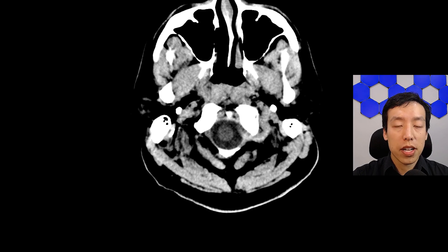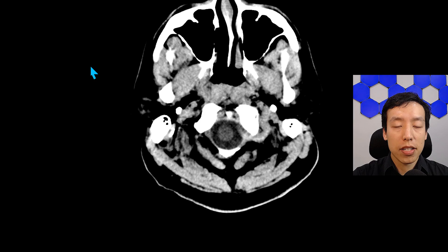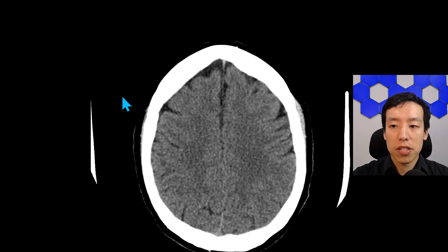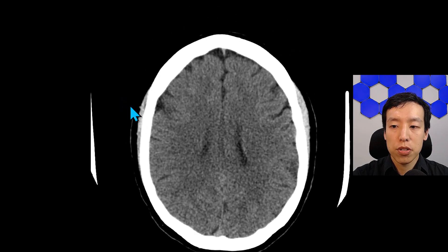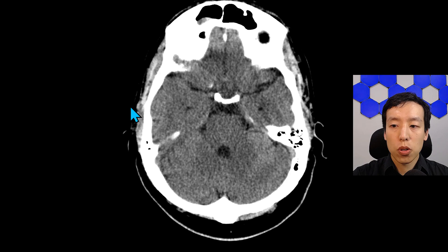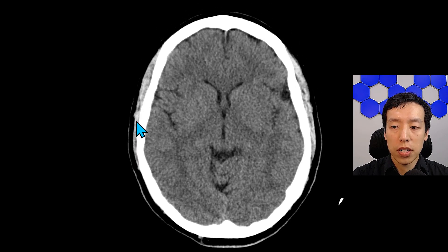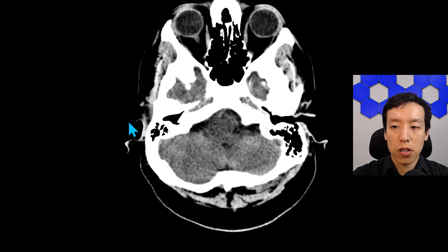A non-contrast head CT was performed. On first pass-through, the basic findings were that there was no hyperdensity to indicate an acute intracranial hemorrhage, nor was there a hypodensity of the posterior fossa structures to indicate an acute territorial infarct.